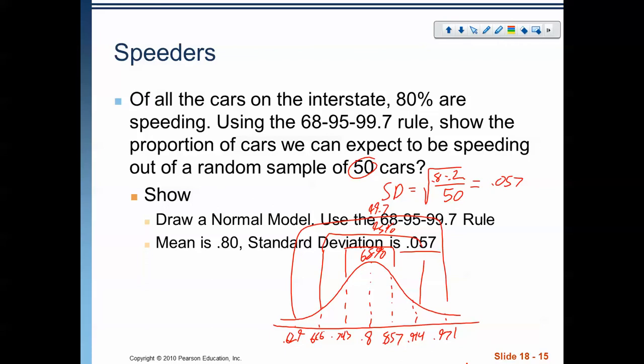Remember, that's what a sampling distribution is telling us. It's telling us the number of samples that are going to fall within these values.